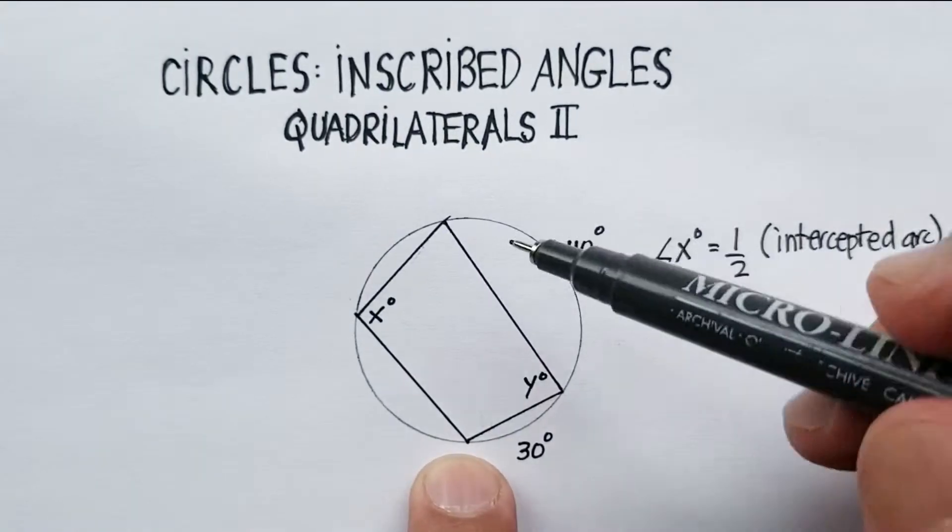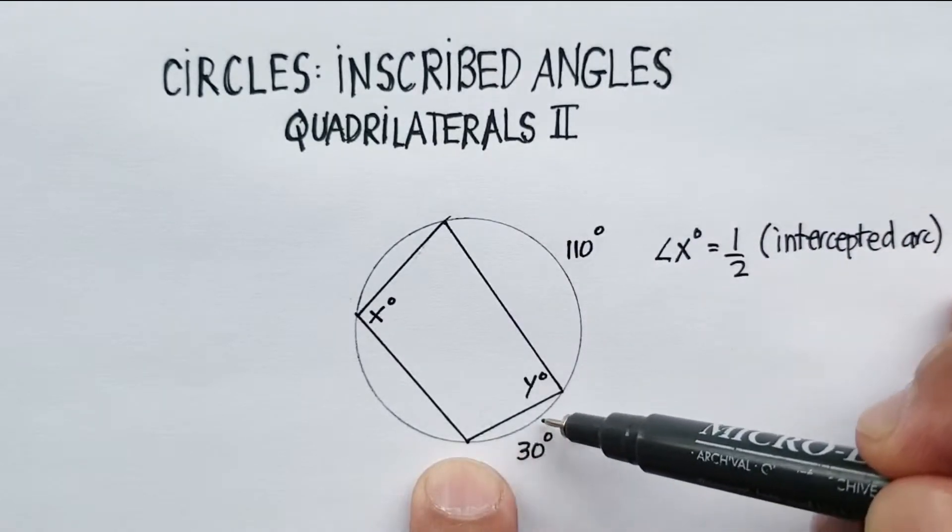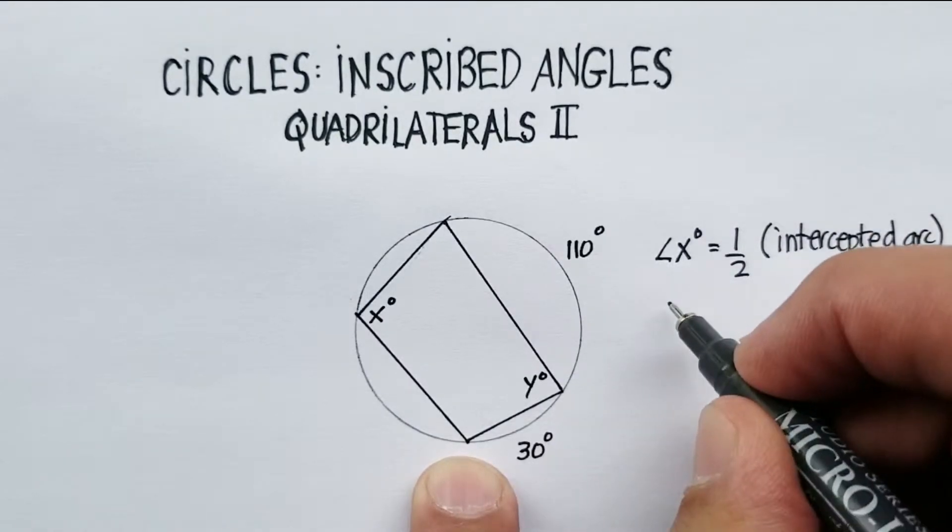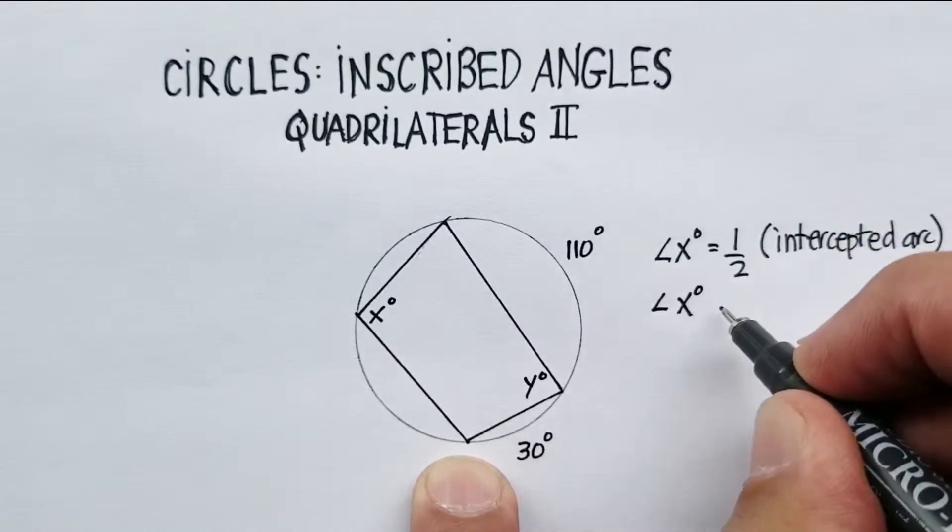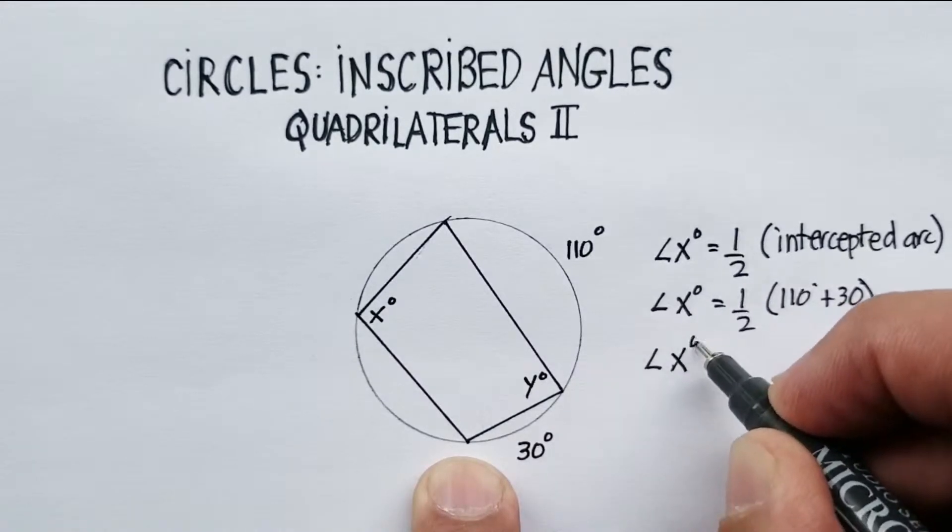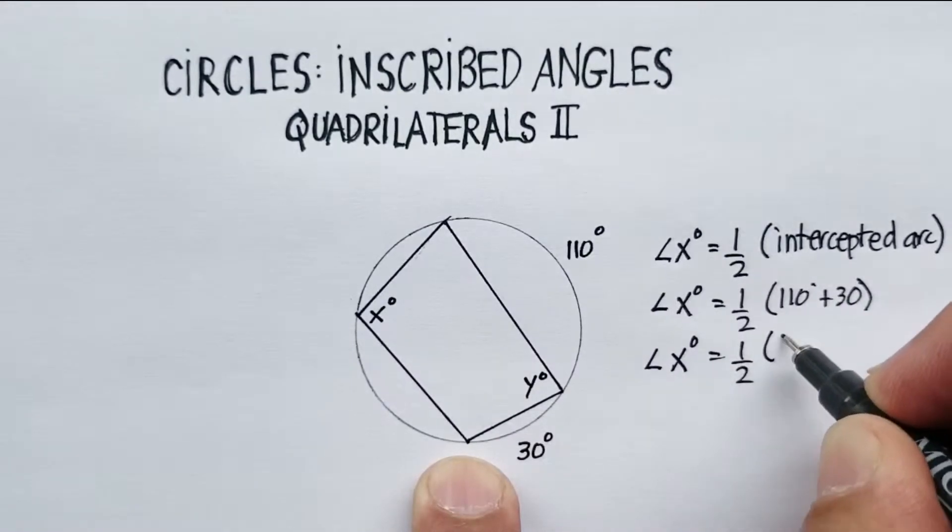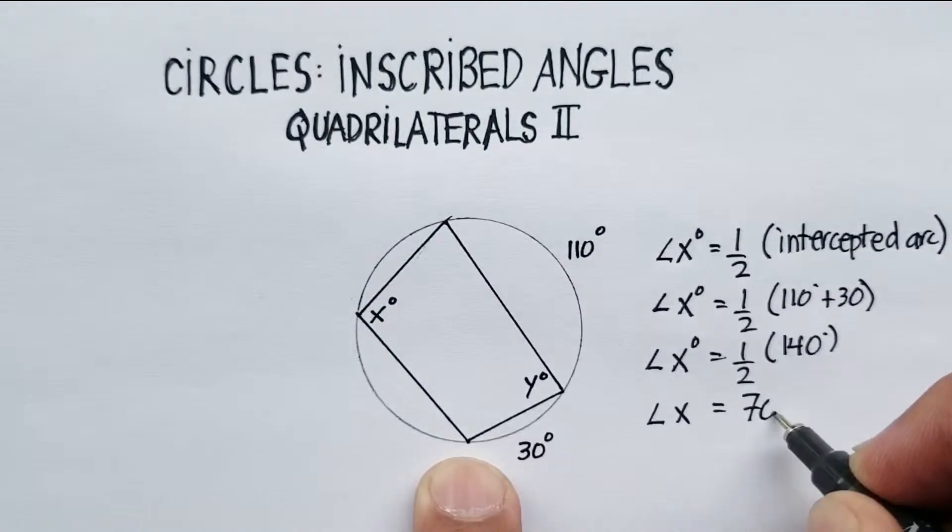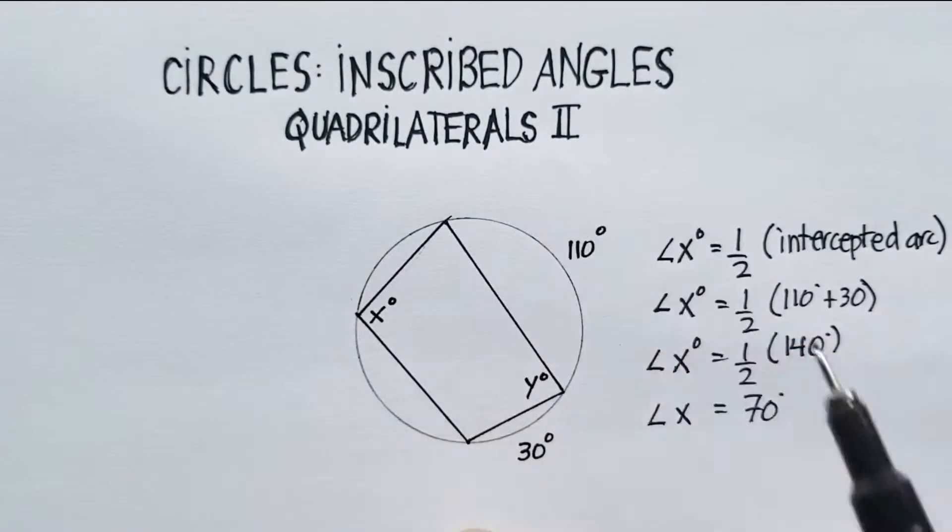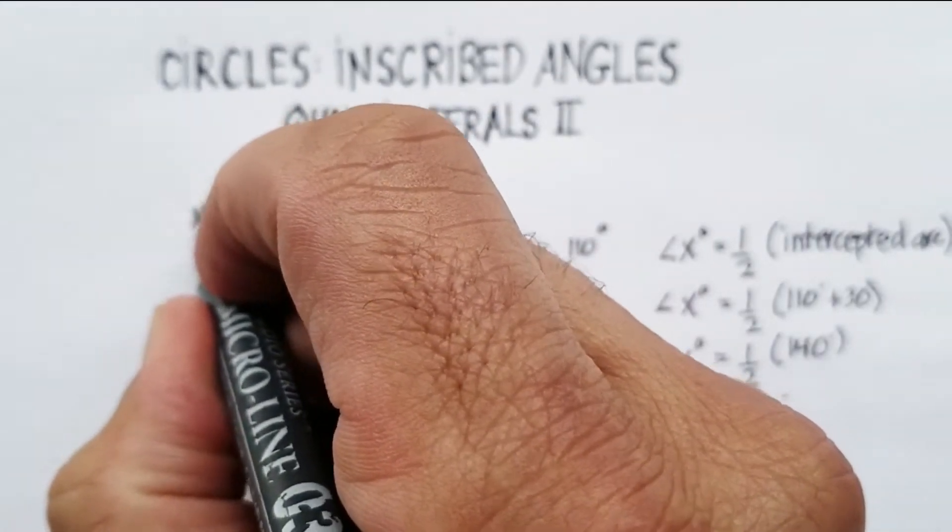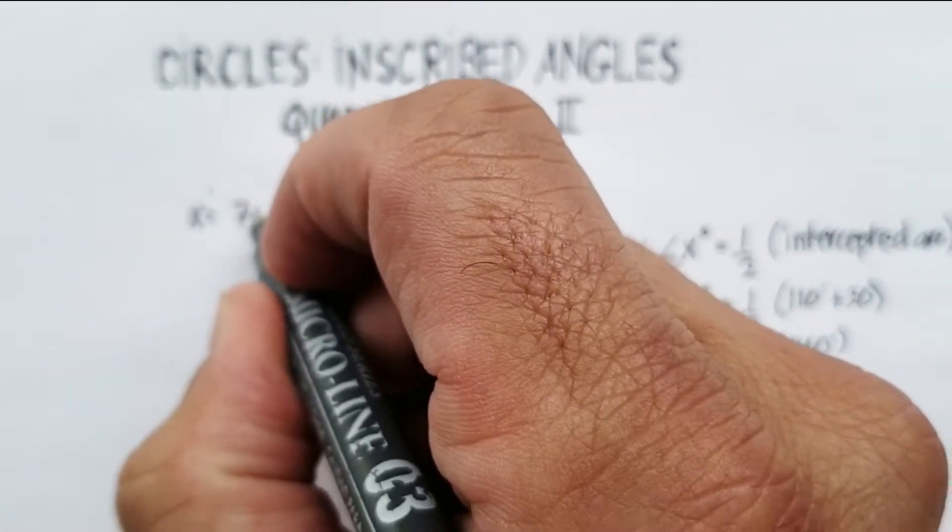Now, in this case, the intercepted arc is this whole arc right here. And we happen to know that the whole arc is equal to 110 plus 30. So angle X is equal to one-half, 110 plus 30, which is 140. Which turns out to be angle X is equal to 70 degrees. So now we know that angle X is 70 degrees.